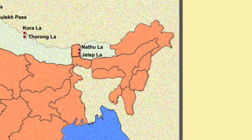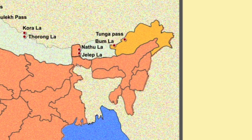Next we come to Arunachal Pradesh. The passes here are, first, Bumla. The next one is Tunga Pass. Tunga Pass is a mountain pass on the border with India and it is located in the district of West Siang.